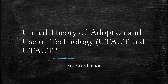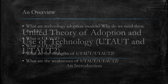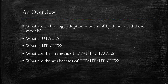Both UTAUT and UTAUT2 are technology adoption models, meant to help explain why or why not individuals and/or organizations choose to adopt and implement new technologies. Here's what we're going to cover today: what technology adoption models are and why we need them, an overview of UTAUT and UTAUT2, and the strengths and weaknesses of each model.